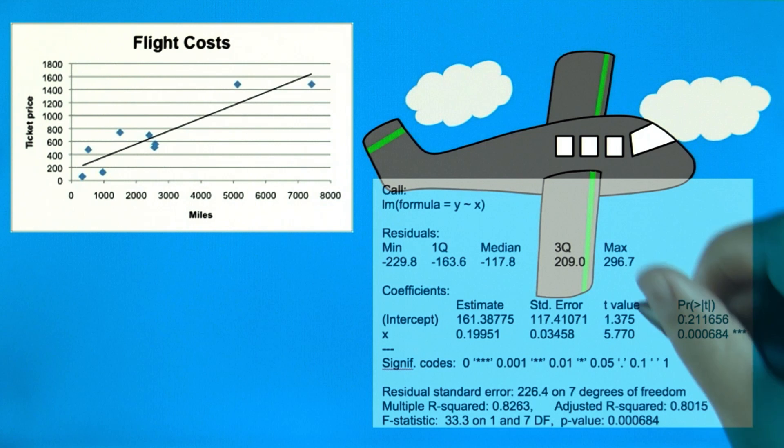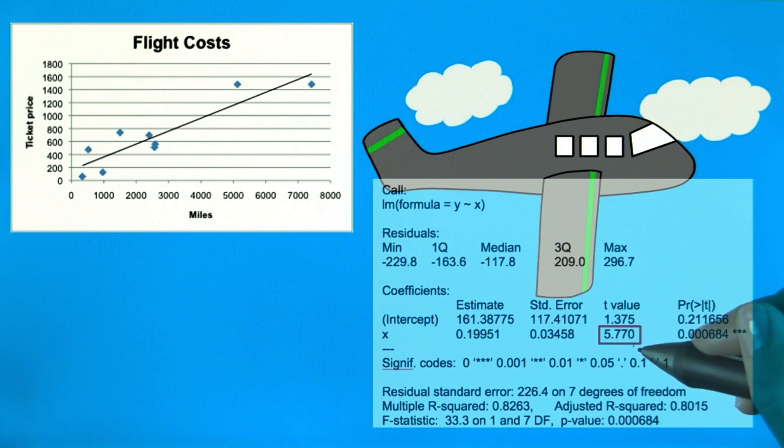Here, you see the t-value for the slope is pretty big, 5.77, the same value I gave you earlier.